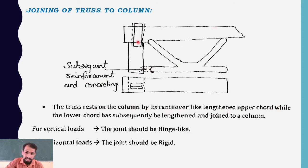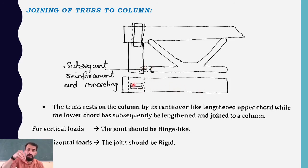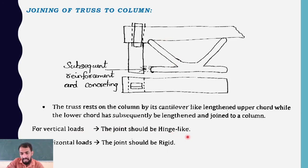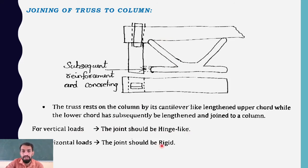The truss rests on the column by its cantilever-like lengthened upper chord, while the lower chord is lengthened and joined to the column. For vertical loads, the joint should be hinge-like; for horizontal loads, the joint should be rigid. Both types of joints are mandatory — we must allow certain rotations and restrict others.